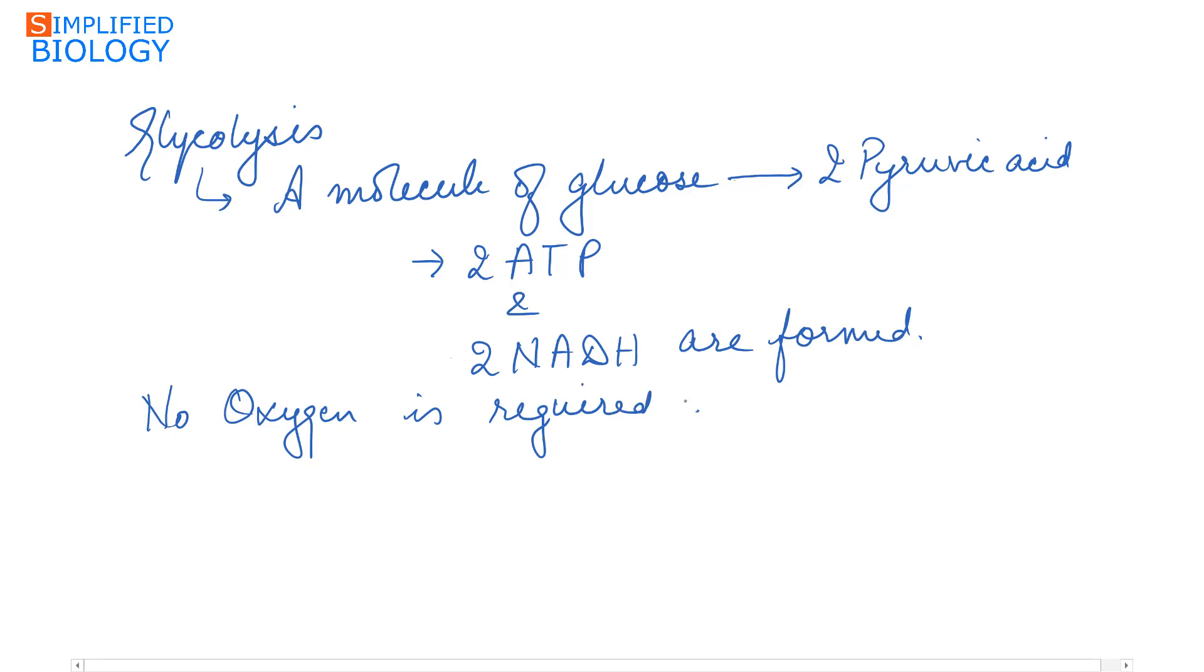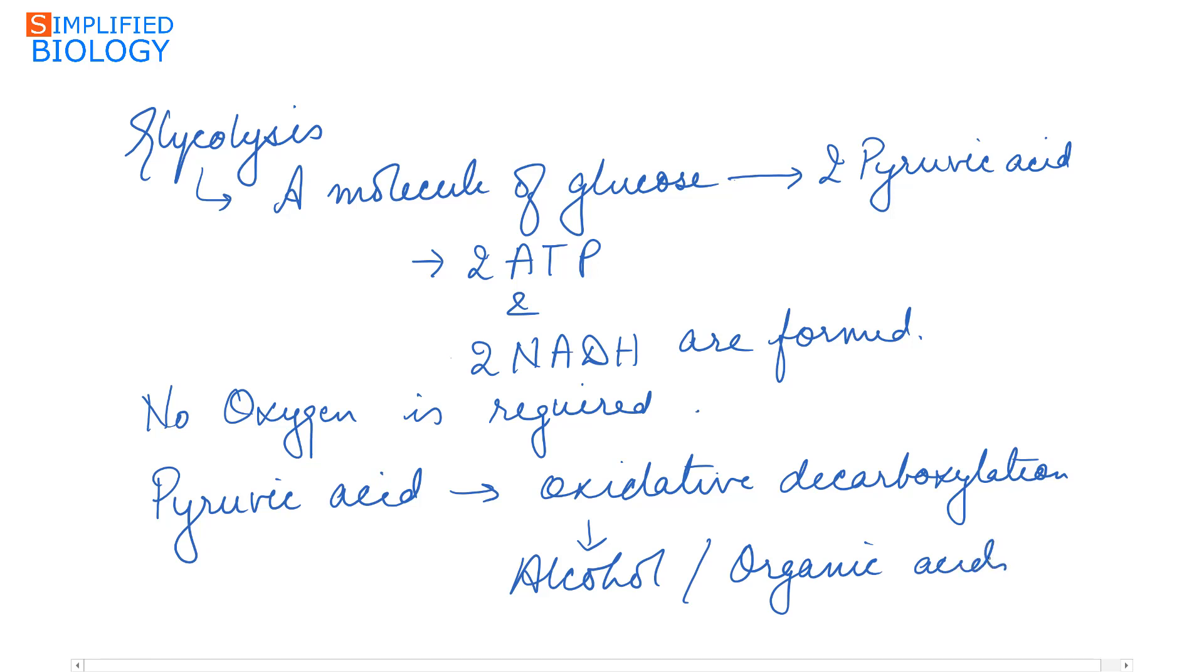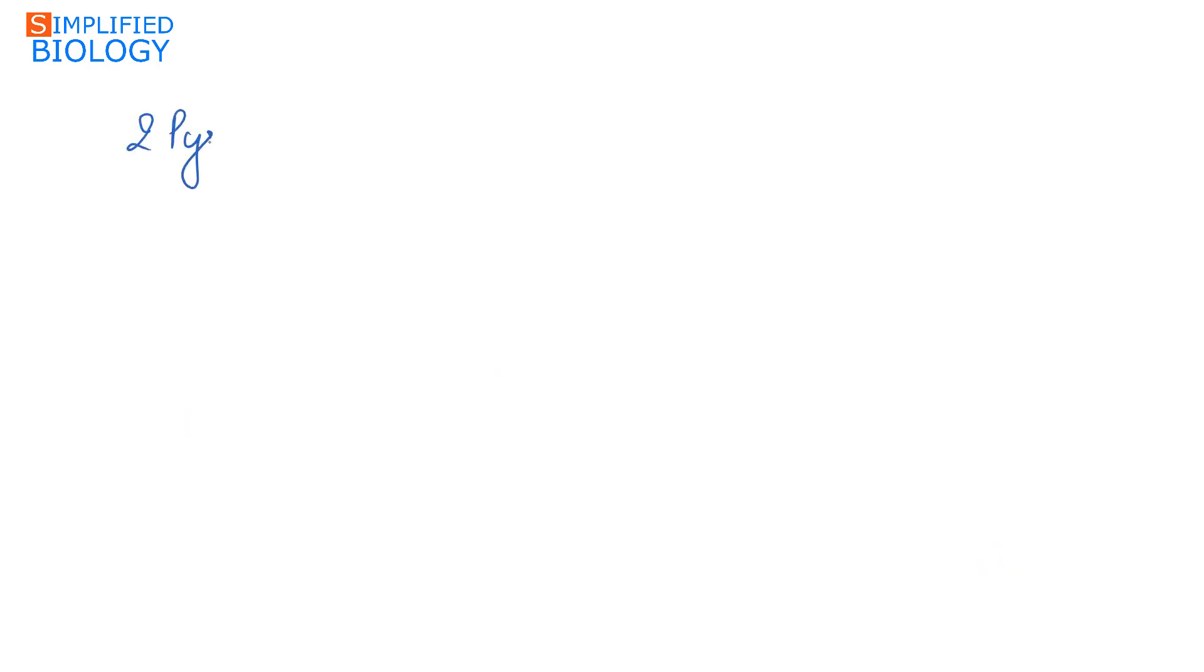The pyruvic acid produced during glycolysis undergoes oxidative decarboxylation to form alcohol or organic acids. Pyruvic acid first undergoes decarboxylation, where carbon dioxide is removed to form acetaldehyde. This occurs in the presence of enzyme pyruvate dehydrogenase.